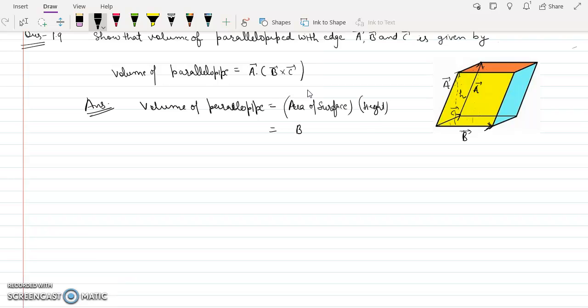So area of surface will be B vector cross C vector magnitude. The projection of A in this perpendicular direction. So I have to find this projection.